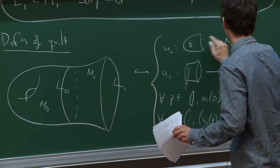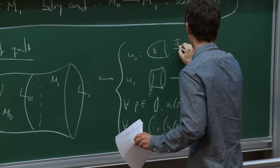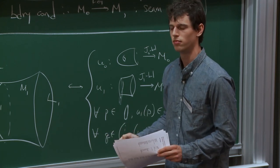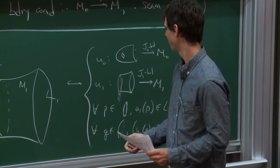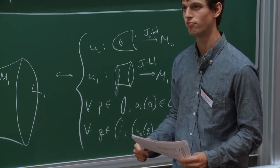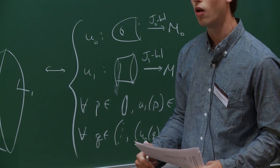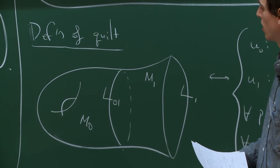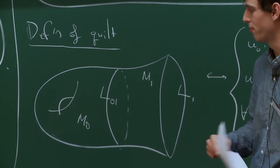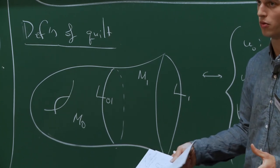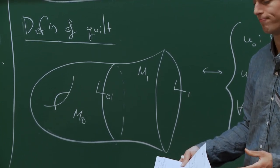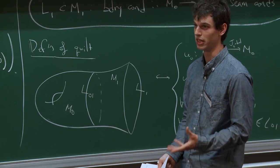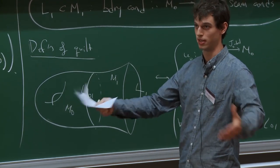An audience member asks whether the seam L01 can go in any way on the surface. In a non-singular quilt you don't allow any intersections of seams. For the purposes of this talk I'm only considering specific quilts, so we don't need to think about what a general well-behaved quilt is — more detail available afterward.